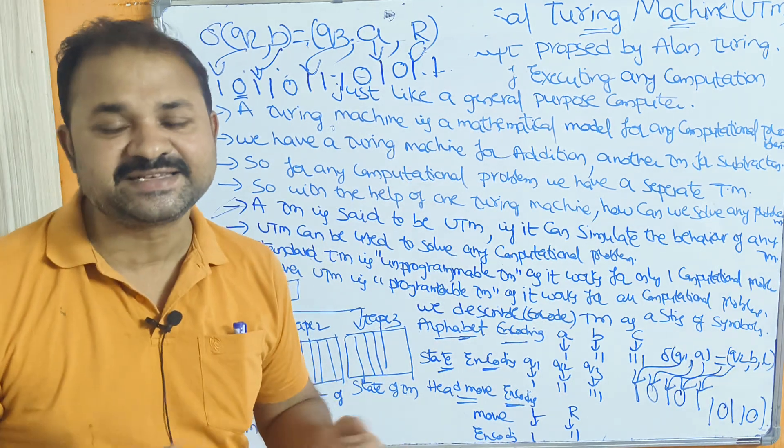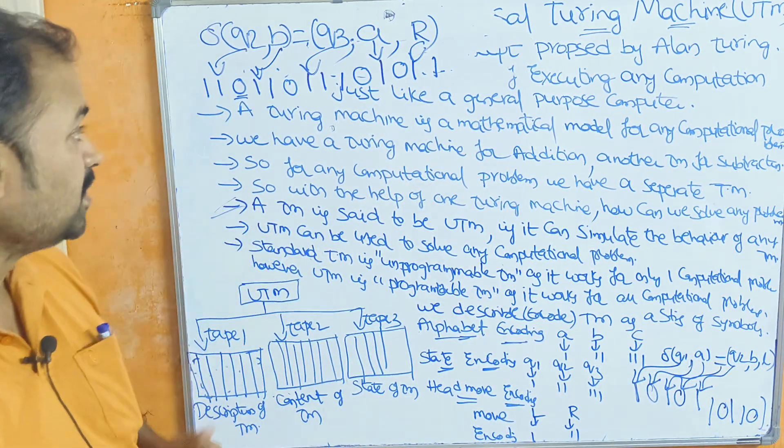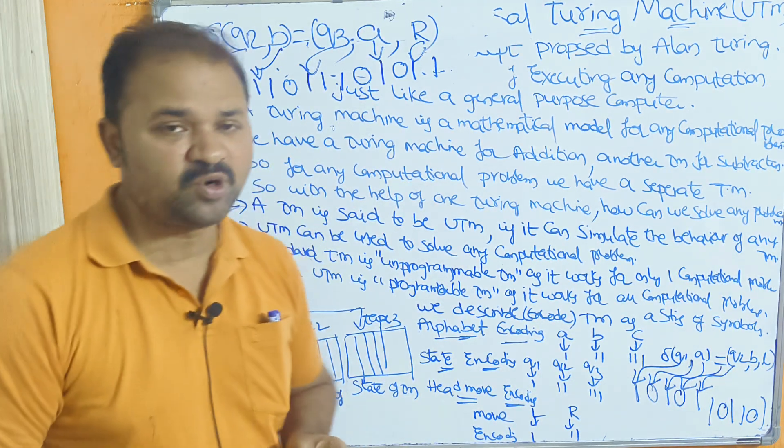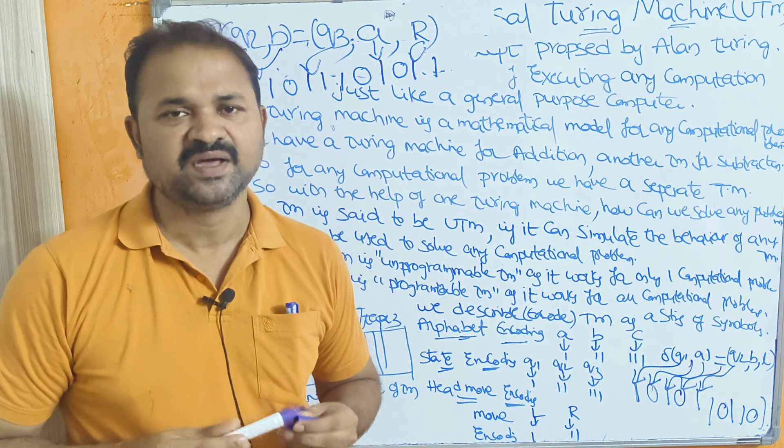Tape 1 mainly contains the description of the Turing Machine. So this is about the Universal Turing Machine.